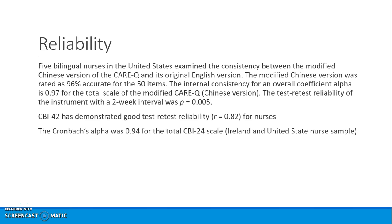There are other examples of reliability for the KRQ. A modified Chinese version was adapted to Chinese culture, and test-retest reliability was assessed with a two-week interval — the p-value was highly significant. The CBI has demonstrated good test-retest reliability for nurses, with a correlation coefficient of 0.82. The same is true for an Ireland and United States nurse example in terms of Cronbach's alpha.